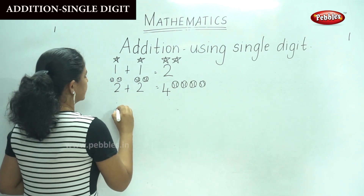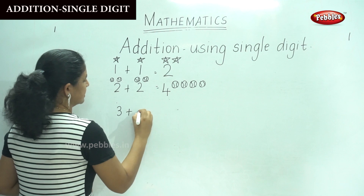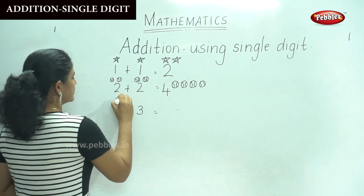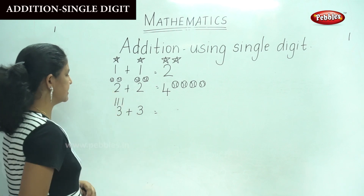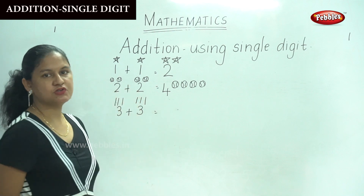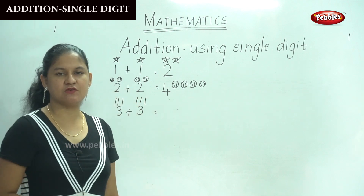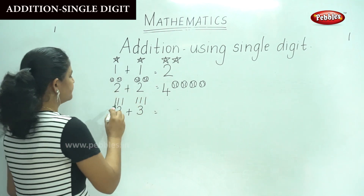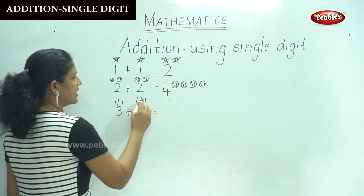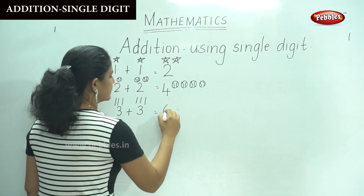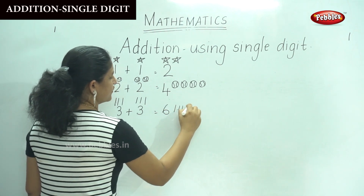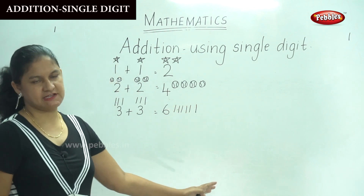Next we have 3 plus 3. I am going to draw 3 sticks: 1, 2, 3, and on this side also 1, 2, 3. To get the total we count all the sticks: 1, 2, 3, 4, 5, 6. So I have 6 sticks. 3 plus 3 gives us 6.